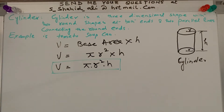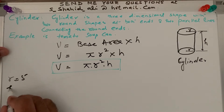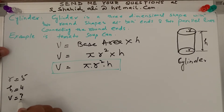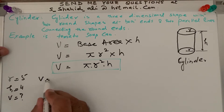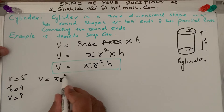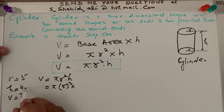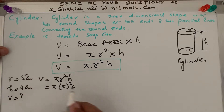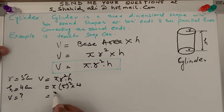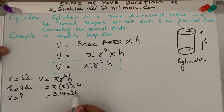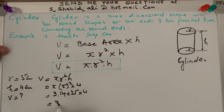To recap: a cylinder is a three-dimensional shape with two round shapes at both ends and two parallel lines connecting the round ends. Now for an example: r equals 5, h equals 4 — find the volume of this cylinder. We plug in the values: V equals pi r squared h, so pi times 5 squared times 4. That is 3.14 times 25 times 4, which gives 314 centimeters cubed.